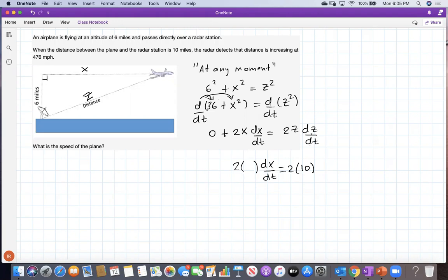Now, the rate dz/dt is given as well. It says the radar detects the distance is increasing at 476 miles per hour. The units are all compatible, so I'm not writing them.